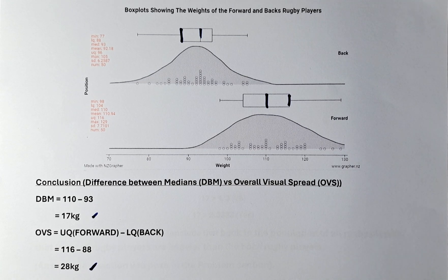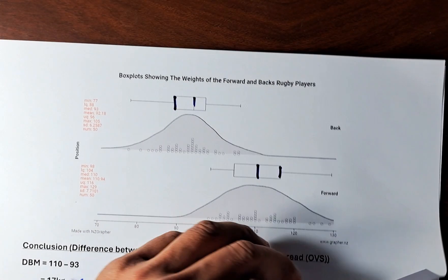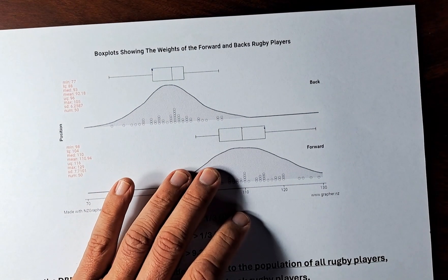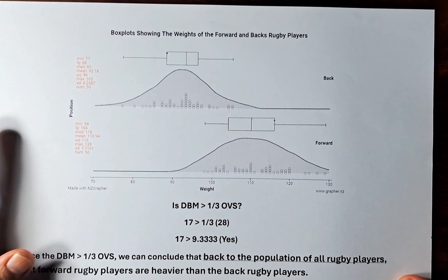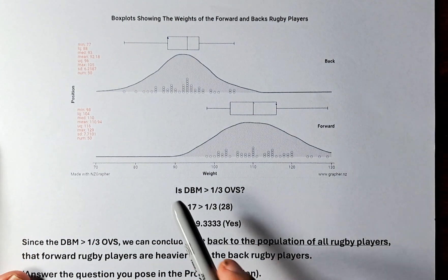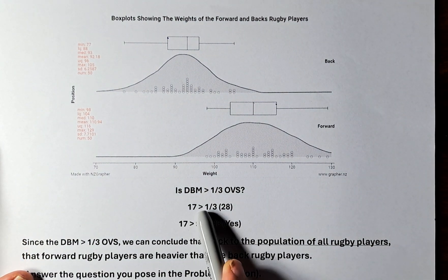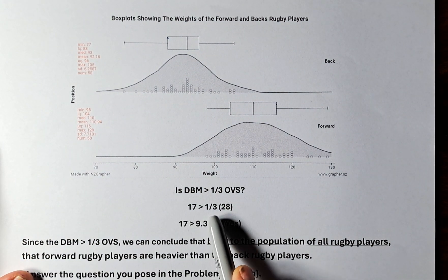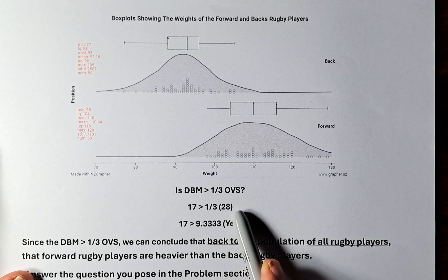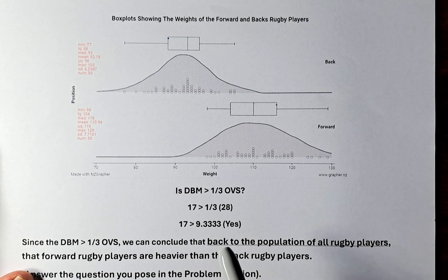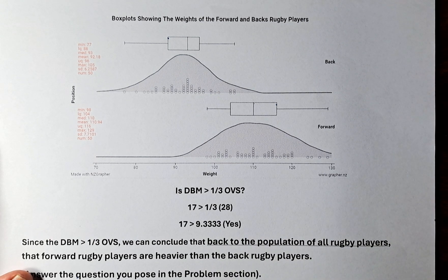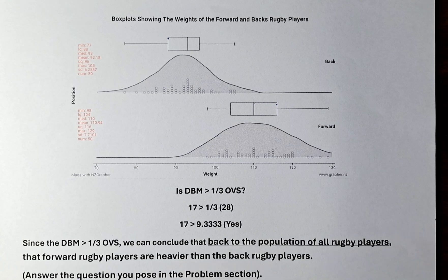Now we need to find out if DBM is greater than one third of the OVS. So we're going to do the calculation now. We know that DBM is 17. Is it greater than one third of the OVS, which is 28? We calculate 28 divided by 3, which is going to be 9.333. So 17 is greater than 9.333.